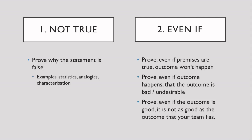To give you an analogy: all arguments generally come in the format of 'X is true, therefore Y and Z.' Rebutting is about first proving that X is not true, then saying even if X is true, Y and Z won't happen, then saying even if Y and Z do happen, they are bad and we should not want them, and lastly, even if Y and Z actually are good, they are not as good as A, B, C from our team.